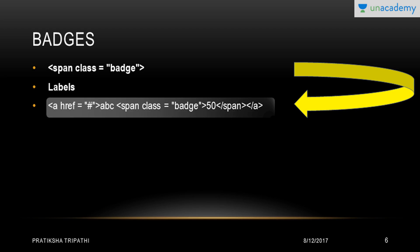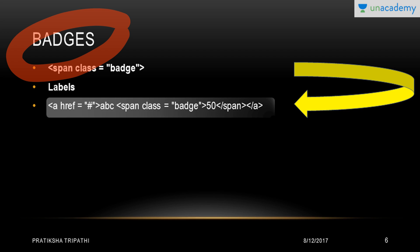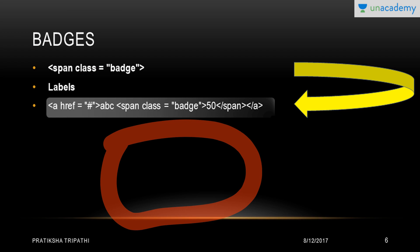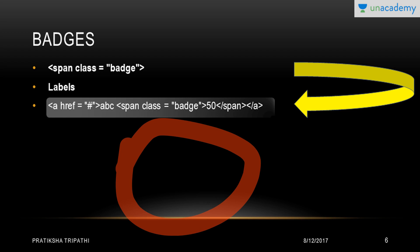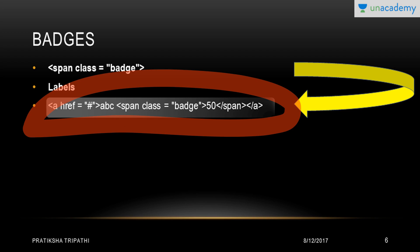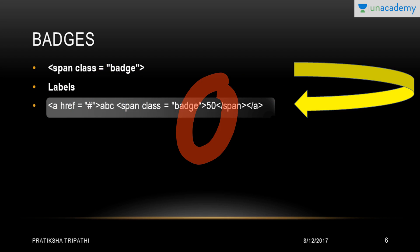Then we have badges. What do badges do? Badges are similar to labels — the primary difference is that the corners are more rounded. It works like a label just to display any text, but its outline has rounded corners, whereas labels have sharp corners. To include a badge in your webpage, you write: href='#' with the text 'abc', a size of 50, and class='badge'. That is how you create a badge.